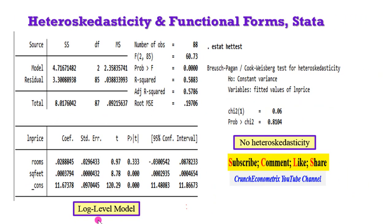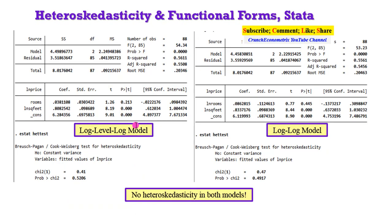As a recap, this is the log-level model that I just showed you from Stata. Evidence of no heteroskedasticity, going by the p-value. This is the log-level-log model. P-value is 52.06%. And here we have the log-log model. P-value is 49.17%. So in both models, there is no heteroskedasticity.